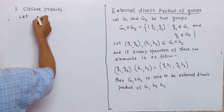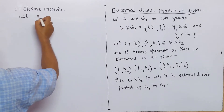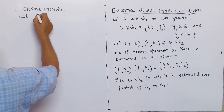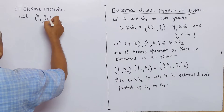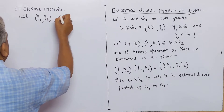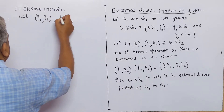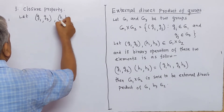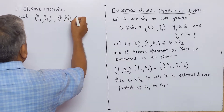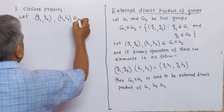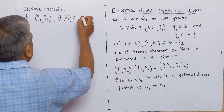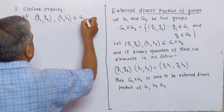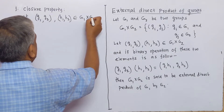Number one: Closure property. Let (g1, g2) and (h1, h2) belong to the direct product G1 × G2.